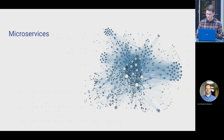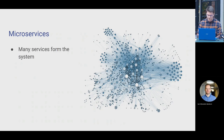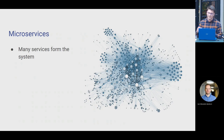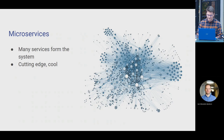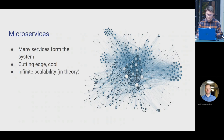On the other end of the spectrum you have the microservices architecture. Each one of these nodes is a specific service in some very large system — maybe Netflix, which has something similar. When we say microservices, we mean many services comprising the entire system. These days it's cutting edge and cool; everybody wants to work with microservices, even people just starting out without really understanding what they solve or when to use them. They're supposed to be much more scalable than monoliths — but let's see what's really the case.